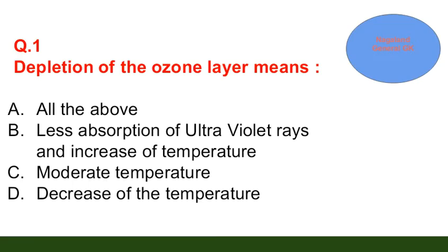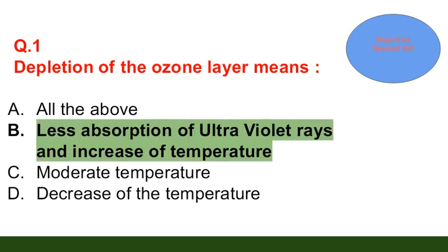Question number 1: Depletion of the ozone layer means — option A: all of the above; option B: less absorption of ultraviolet rays and increase of temperature; option C: moderate temperature; option D: decrease of temperature. The correct answer is option B — less absorption of ultraviolet rays and increase of temperature.